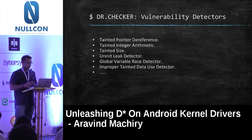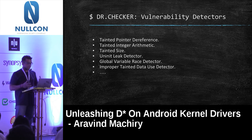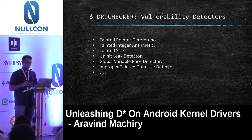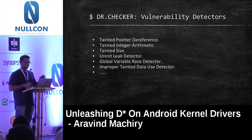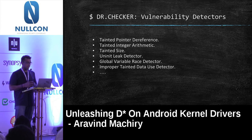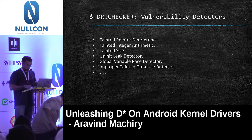DRChecker uses several vulnerability detectors. First, tainted pointer dereference — checks for any pointer dereference controlled by user. Tainted integer arithmetic — checks for arithmetic involving tainted values, helping detect integer overflows. Tainted size — checks for user-controlled size used in sensitive functions like memcpy. Uninitialized leak detector — checks for uninitialized kernel stack or heap data leaked to user space. Global variable race detector and improper tainted data use detector — detects tainted data in sensitive functions like printf or scanf to find format string errors.